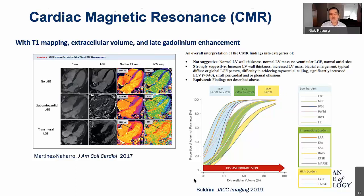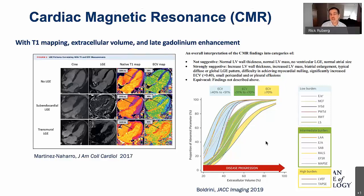Cardiac MR also provides great insight into the continuum of amyloid deposition. Using extracellular volume to predict abnormalities in other variables: high-burden disease metrics include LVEF and TAPSE — you need a lot of amyloid in the heart to drop the LVEF out of the normal range. Low-burden disease measures include E/E prime, myocardial contraction fraction, wall thickness, relative wall thickness, and longitudinal strain, which become abnormal at relatively low levels of ECV increase still in the amyloid range. ECV really informs our understanding of the continuum of amyloid deposition in AL and ATTR amyloidosis.